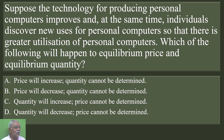Well, these are the options. C is the correct option: quantity will increase, price cannot be determined. But why? We shall examine.